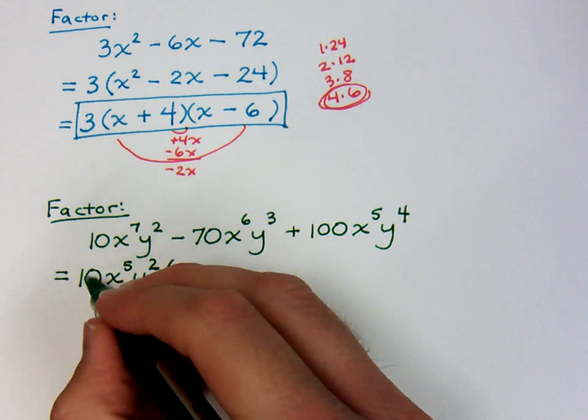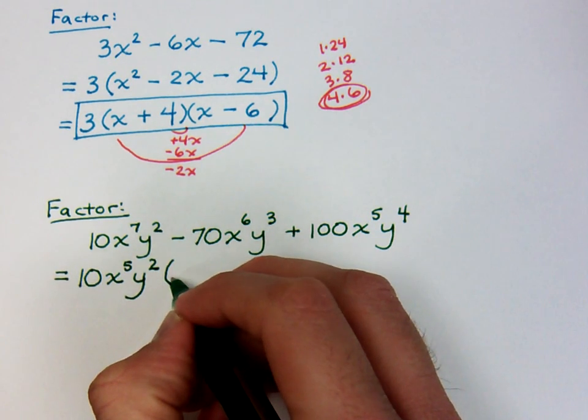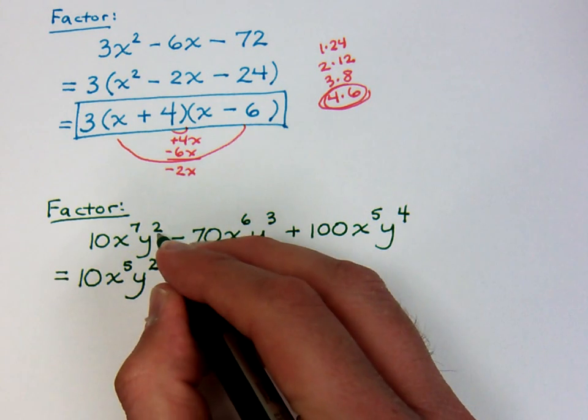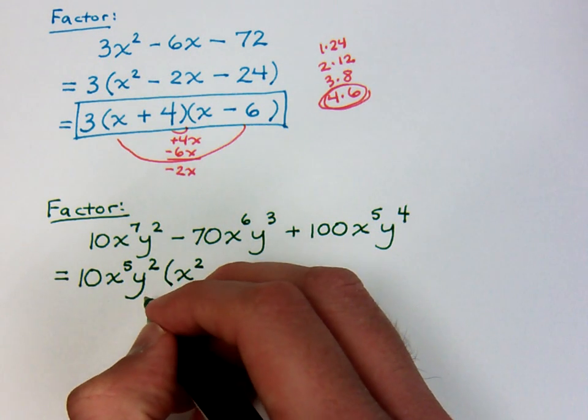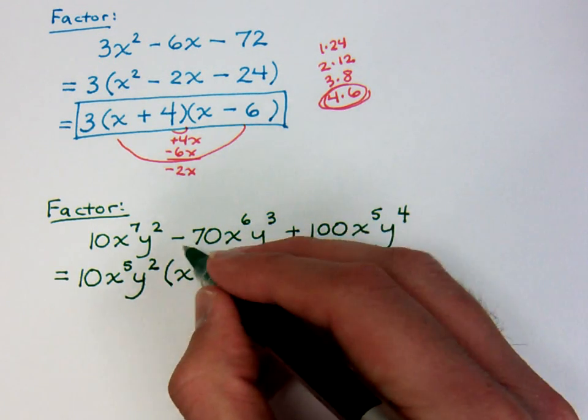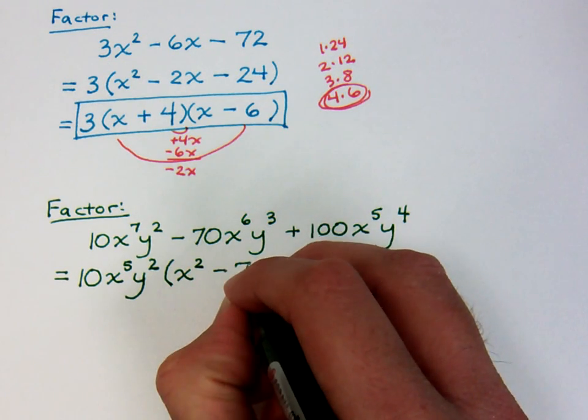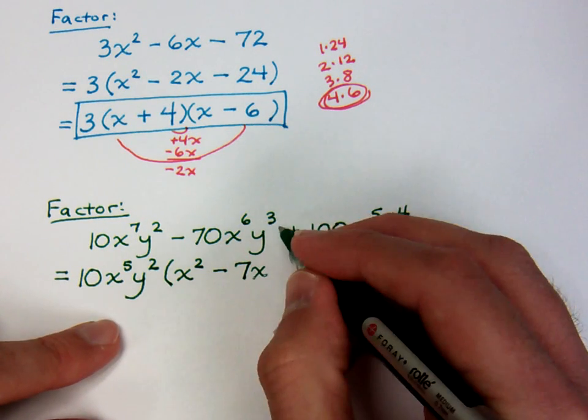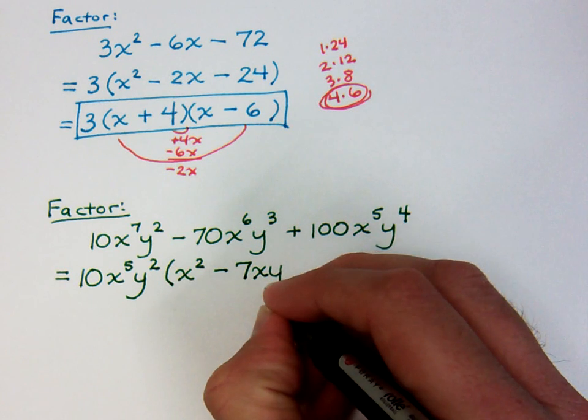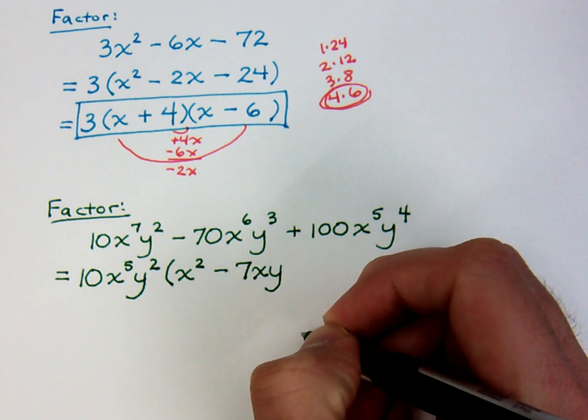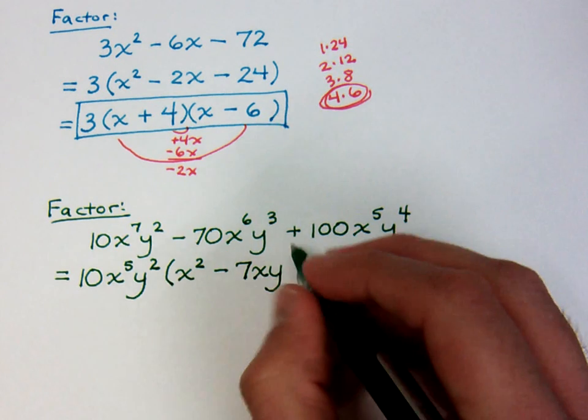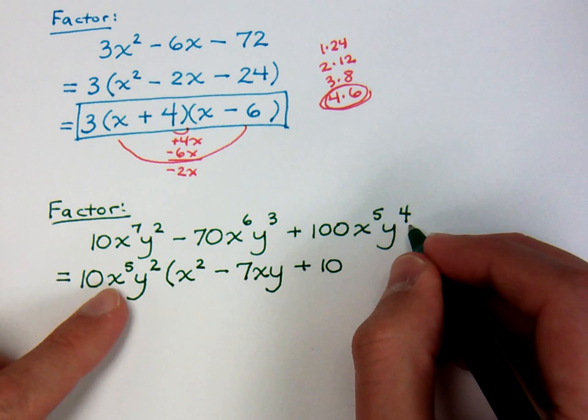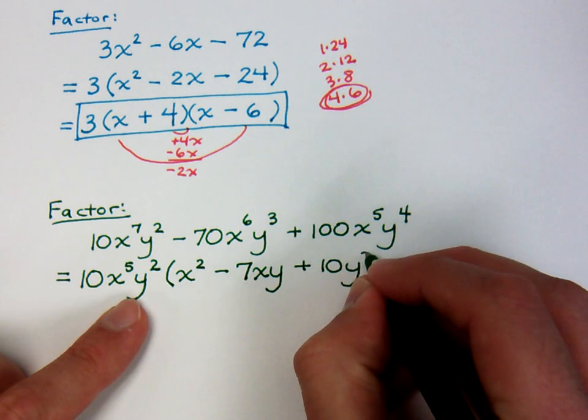Now, 10 divided by 10 is 1. I'm not going to write that, but it is 1. I had 7 x's. I took out 5 of those, so I have x squared. I had y squared, but I took out all of my y, so I have none left. Now, the middle guy. 70 divided by 10, so it's a negative 7. I had 6 factors of x. I took out 5, so I have 1 factor of x left. 3 factors of y, but I took out 2. That's 1 factor of y. Now, here, this is 100. 100 divided by the 10 is 10. We had x to the 5th, but we took out all of the x's. We have y to the 4th, and we only took out 2, so we have y squared left over.